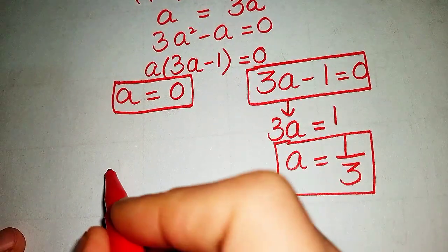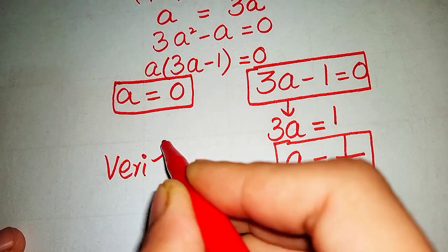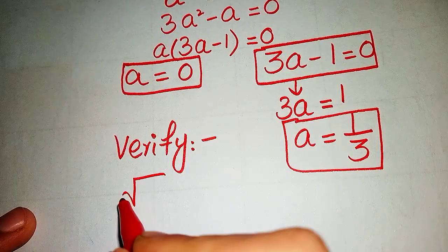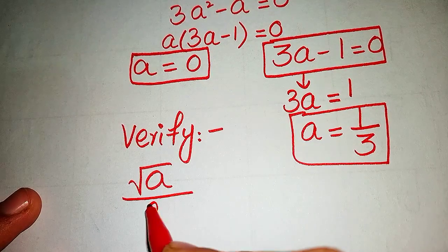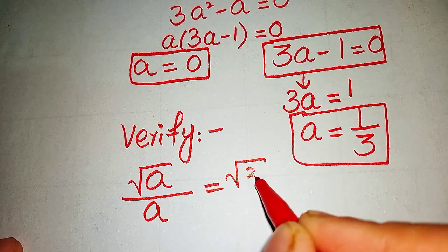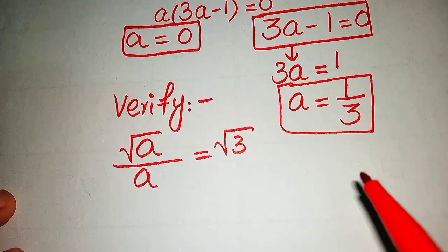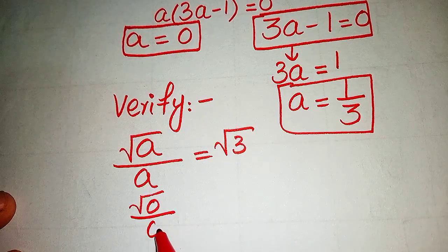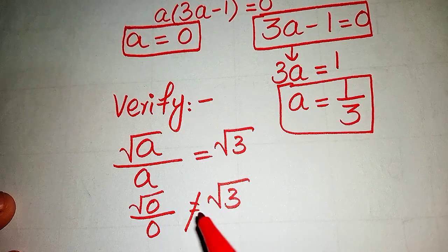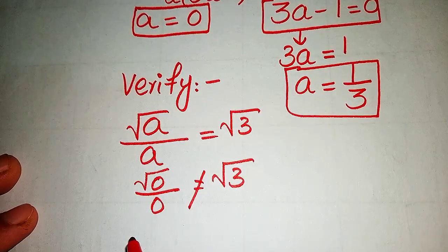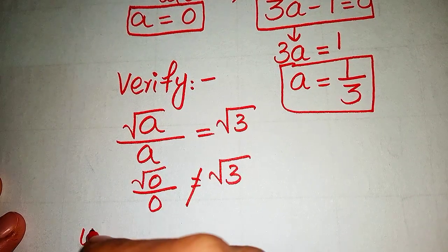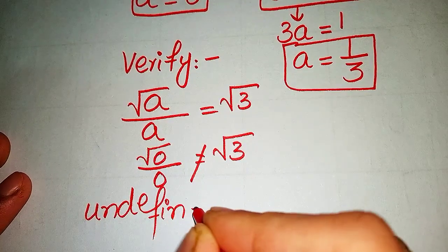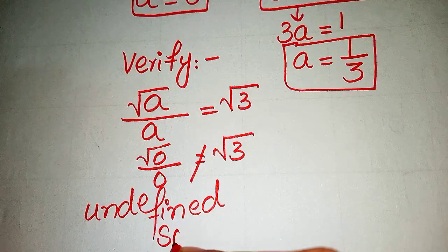Let's verify by substituting into √a / a = √3. Putting a = 0 gives us 0/0, which is undefined and not equal to √3. So a = 0 is not a solution of our given equation.